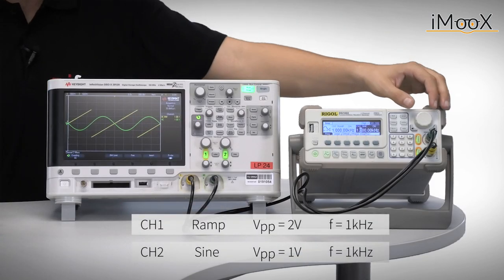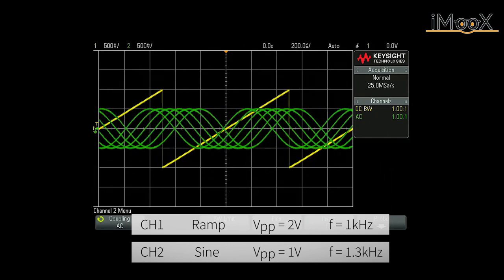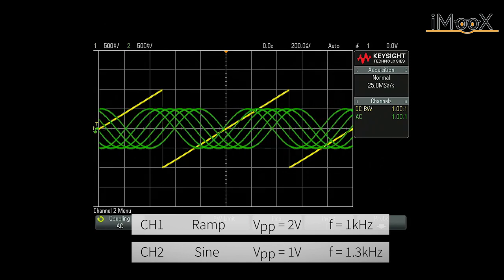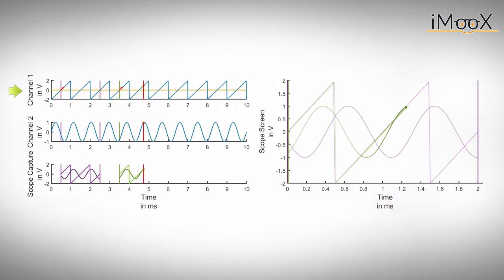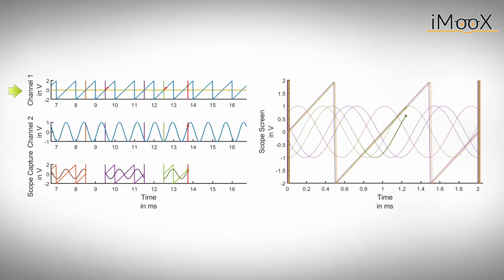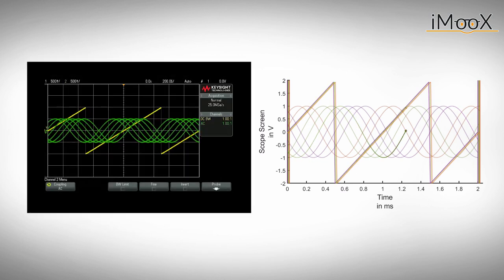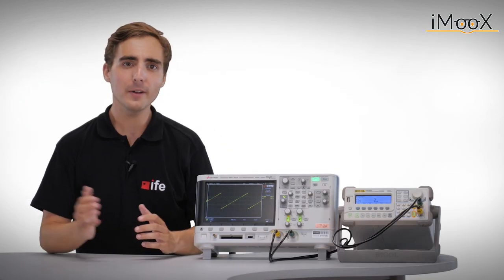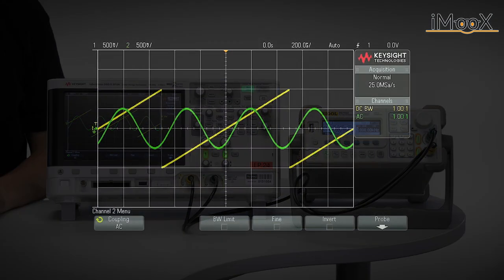However, when changing the frequency to a non-integer multiple of channel 1, we see that the second channel capture is not static anymore. This is due to the fact that the starting point of the second channel is always at a different position within the signal's period. Let us again have a look on the trigger animation. You can see that the trigger of the first channel remains the same. However, the second channel is always drawn on a different position on the scope screen. Therefore, the first channel produces a static and the second one a non-static image on the screen. Comparing our animation with the scope screen, we see that we get a similar result. However, for an integer multiple of frequency, the starting point of the captured signal is always the same in one period and therefore the image is static again.